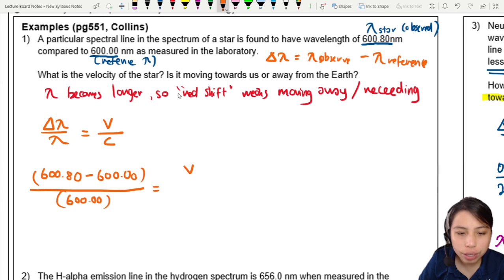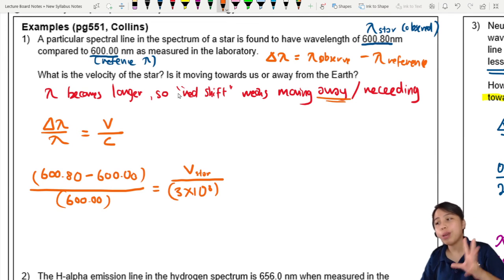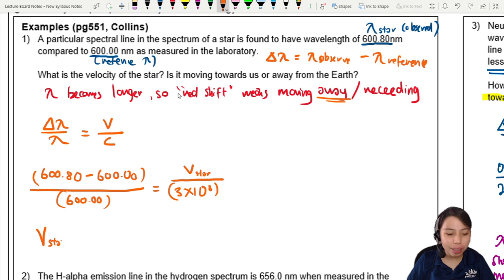This will be equal to the velocity of this star that is moving away from us, over the speed of light, which is 3 times 10 to 8. This constant you can find on the first page of every question booklet or your calculator, or just memorize it. So the velocity of the star here is going to be 4.0 times 10 to the 5 meters per second.